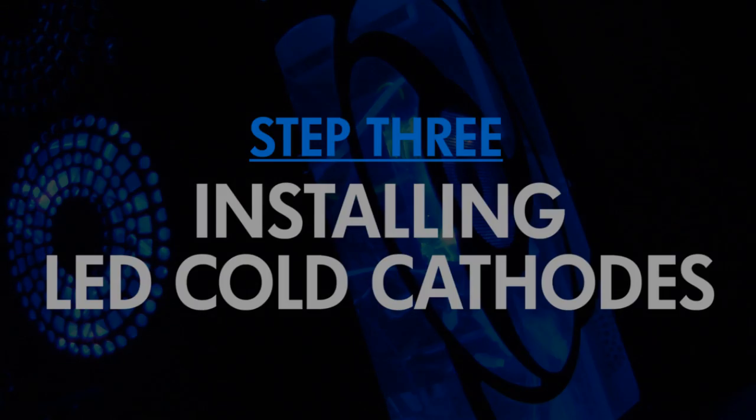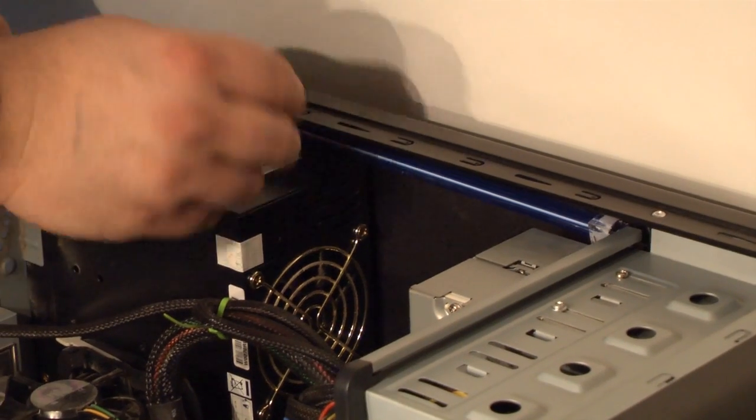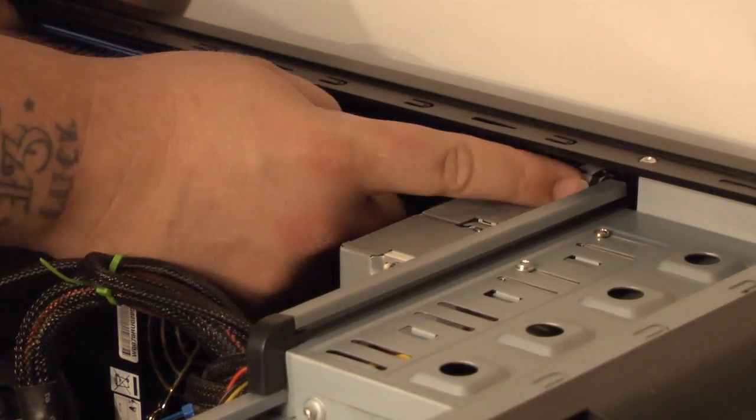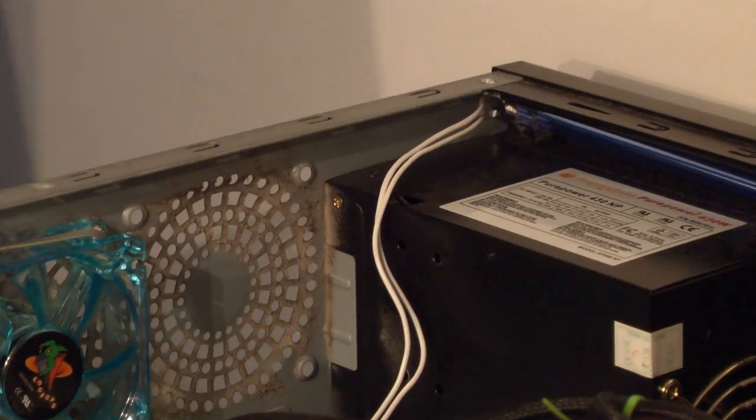Now, onto the cathodes. Once again, you're going to want to determine the placement before the install. We're going to keep them hidden remotely on the top and bottom of the case. This ensures that the light is spread evenly throughout the case for maximum effect.